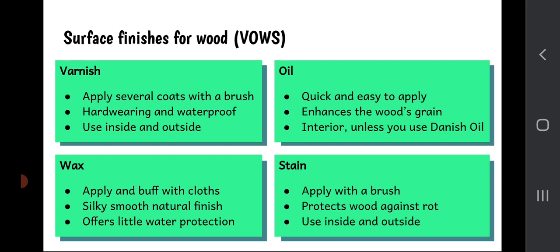Finally, stain. Stain is what people paint their sheds and fences with. You can get stains in all sorts of colors. You apply it with a brush, and it can protect the wood against rain and rot. You can use it inside and outside. If you've got wood that you'd like to make colored but you'd also like to see the wood grain through it, then you would stain that wood.